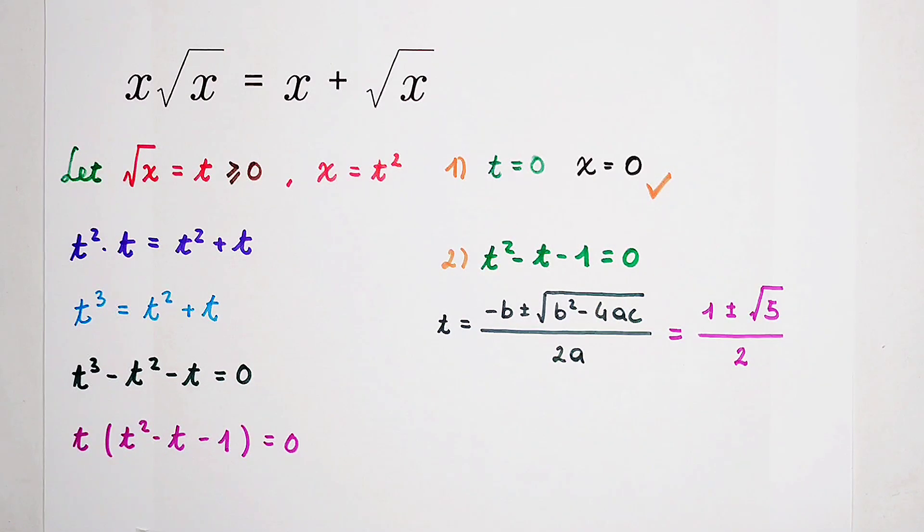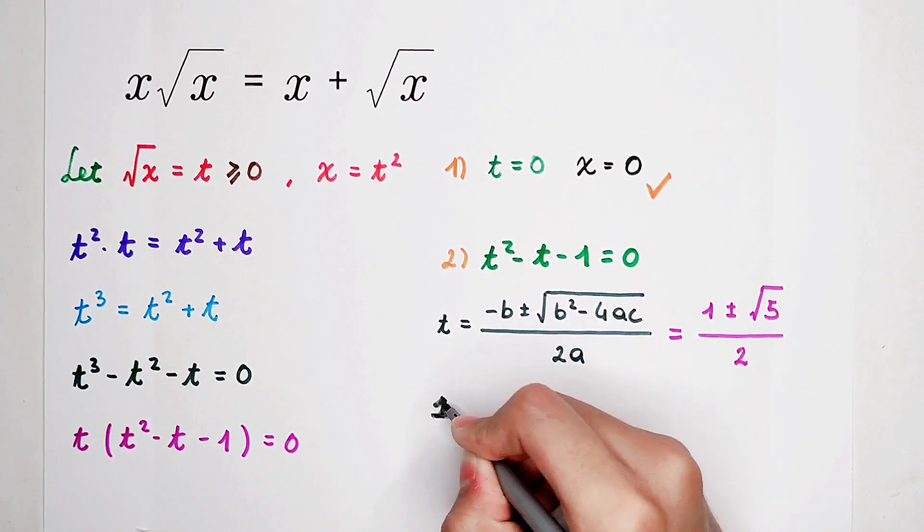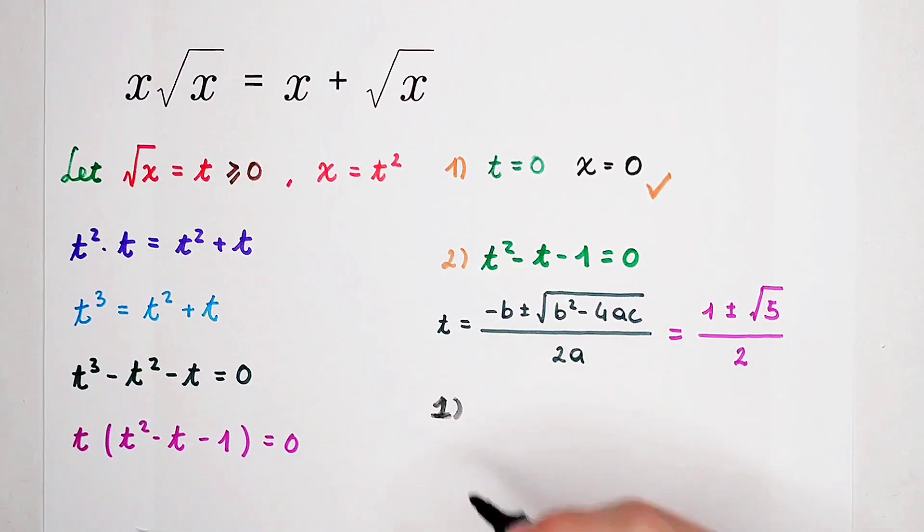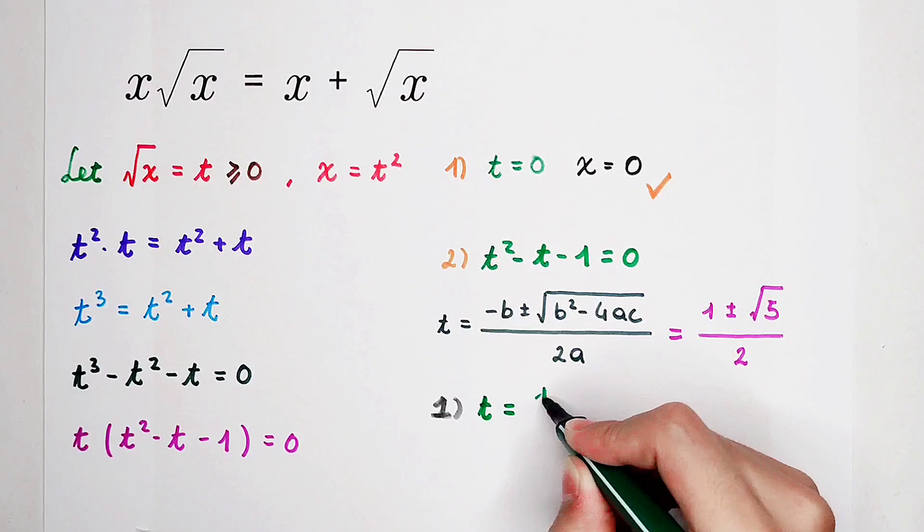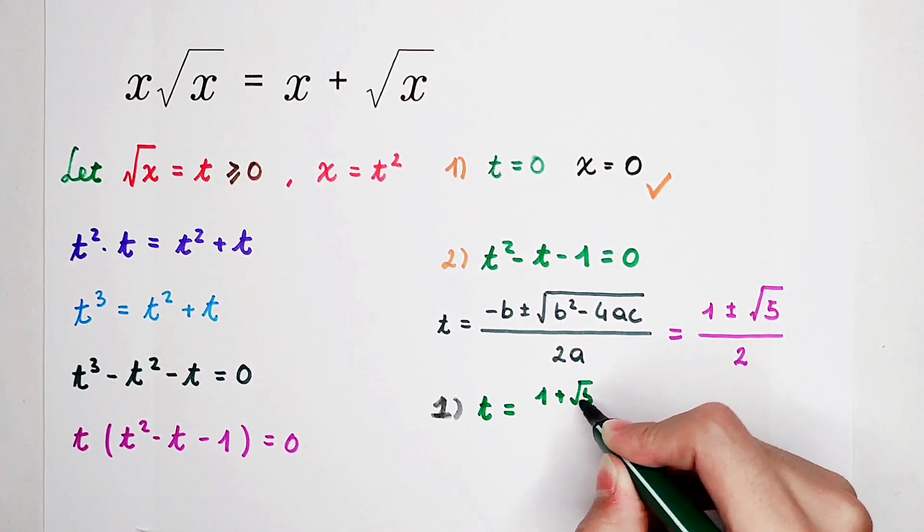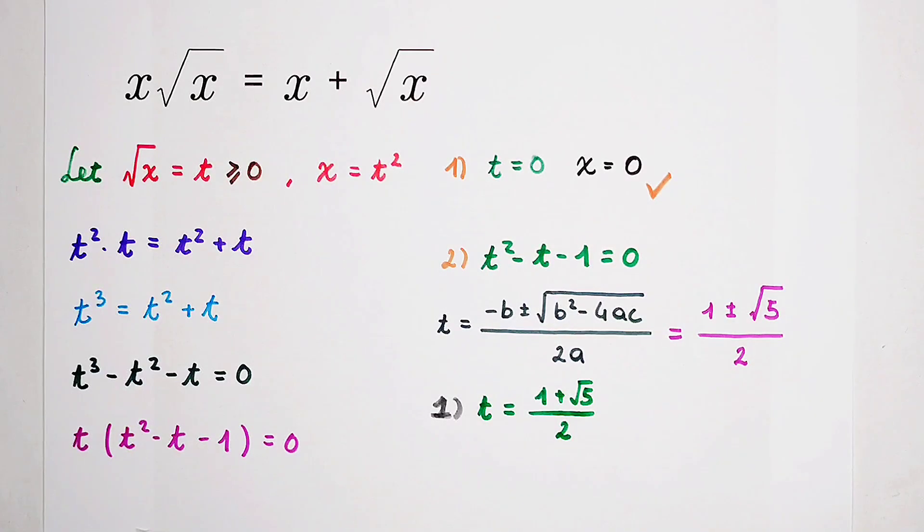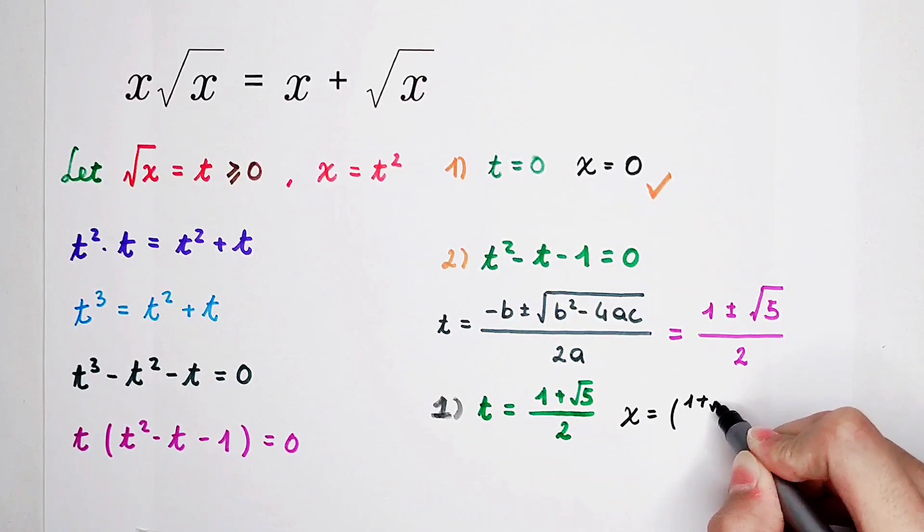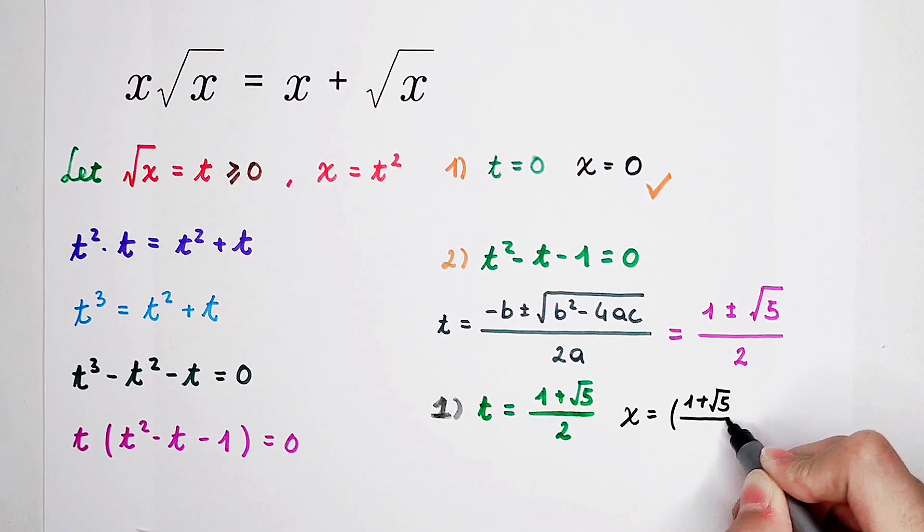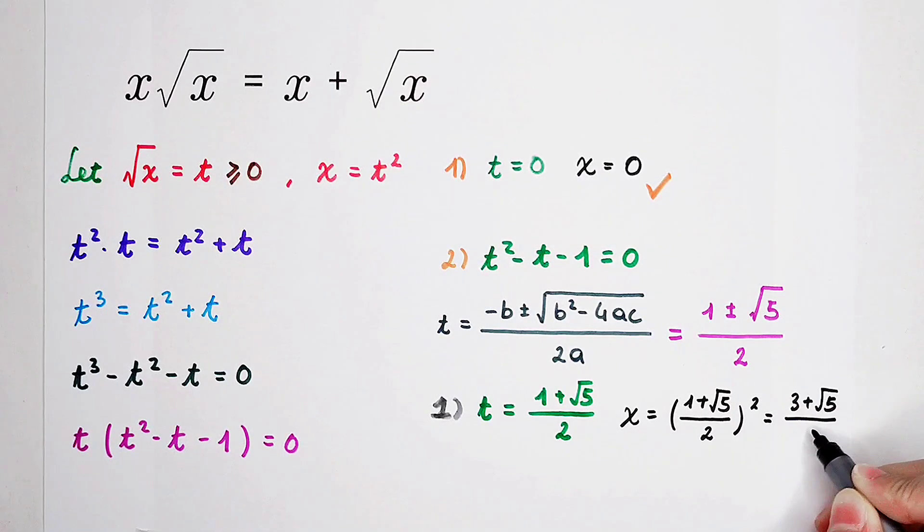Under the second case, we also have two cases. The first case. When t is equal to 1 plus square root of 5 over 2. Then, what is x? Of course, x is equal to 1 plus square root of 5 over 2 or squared. It is 3 plus square root of 5 over 2.